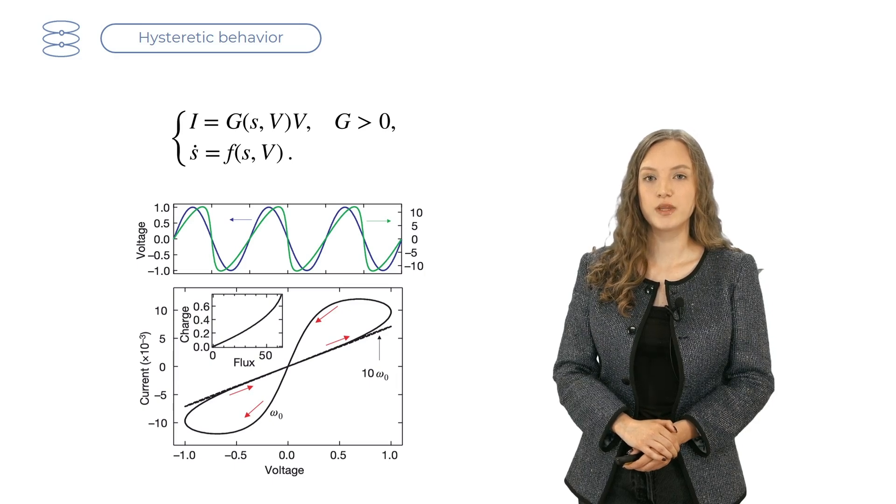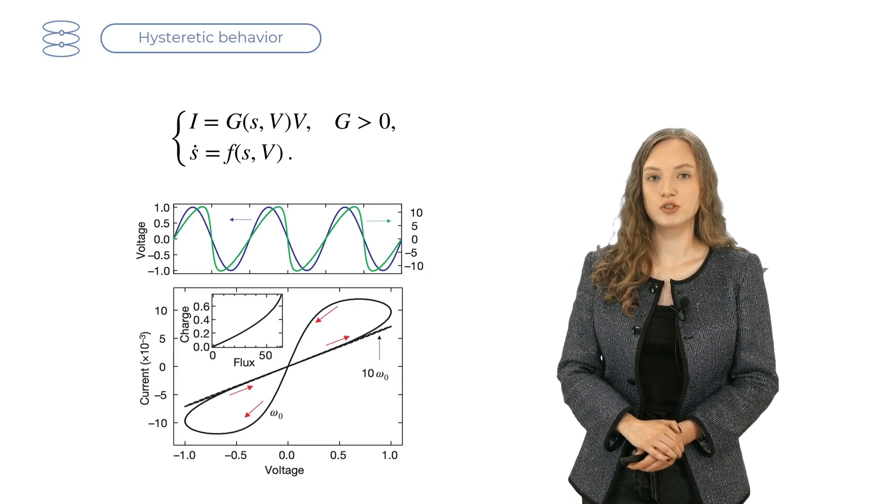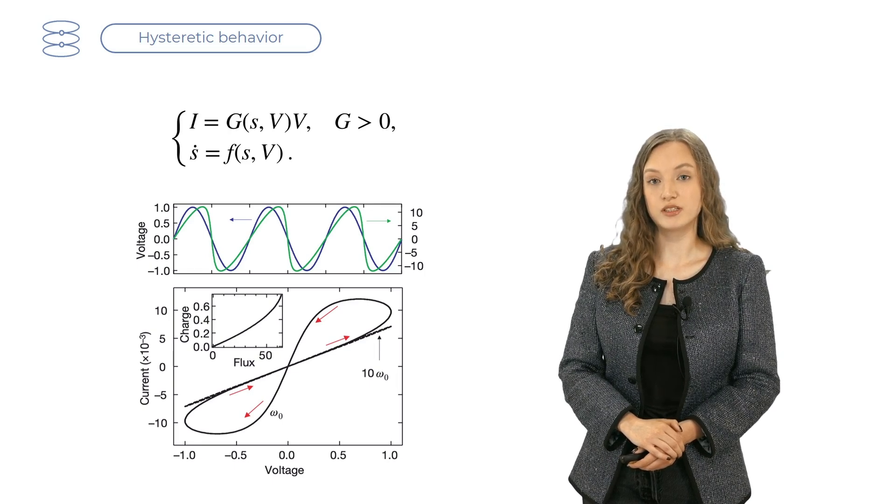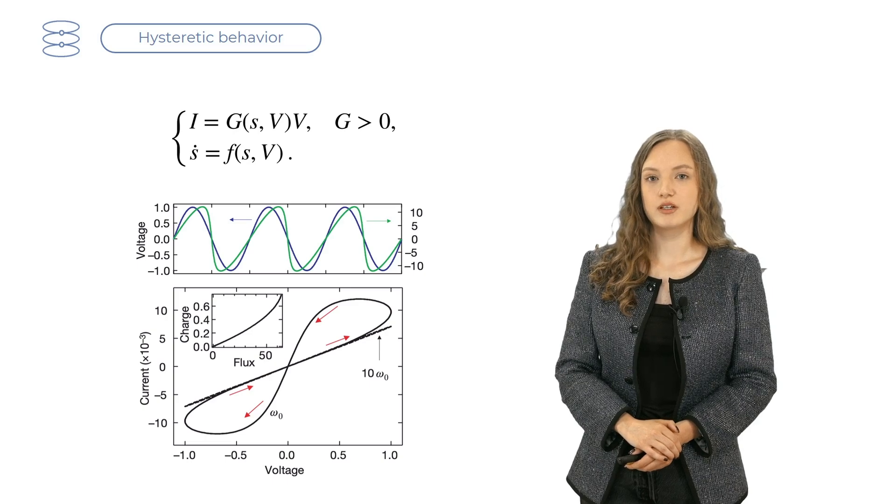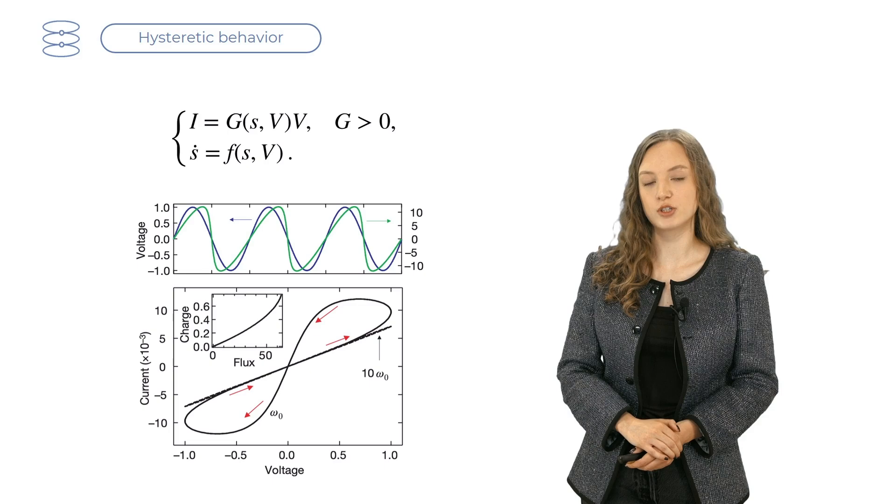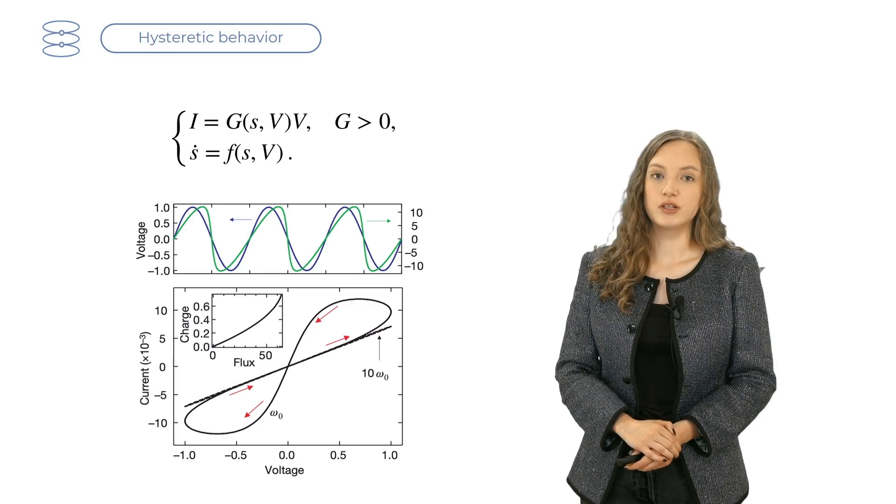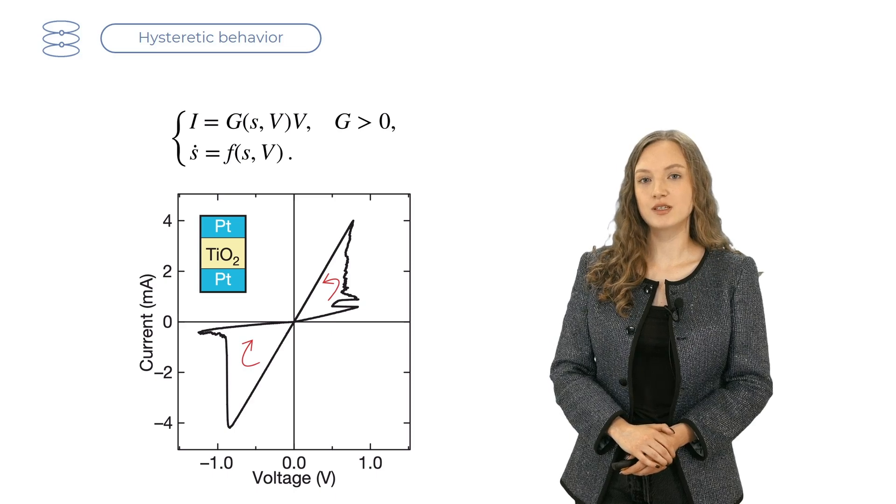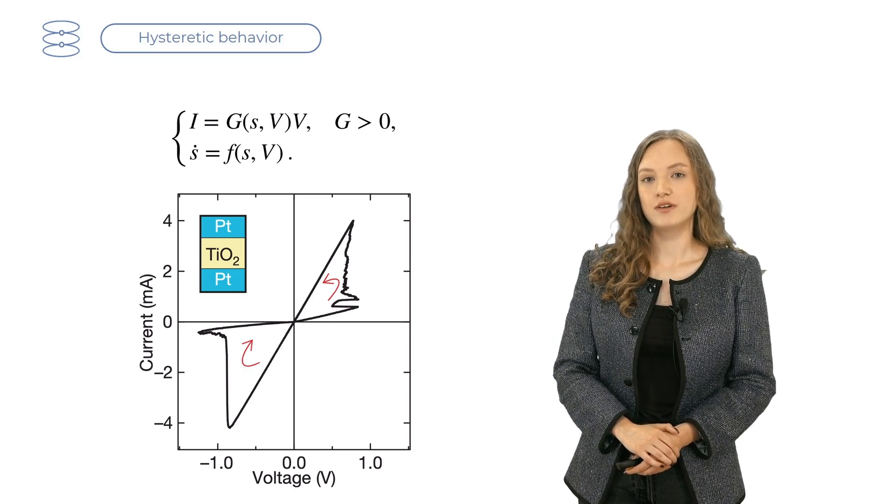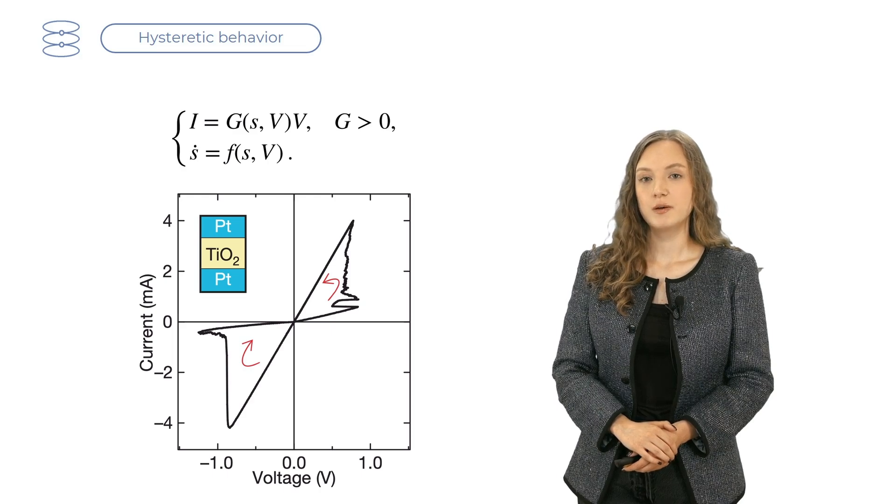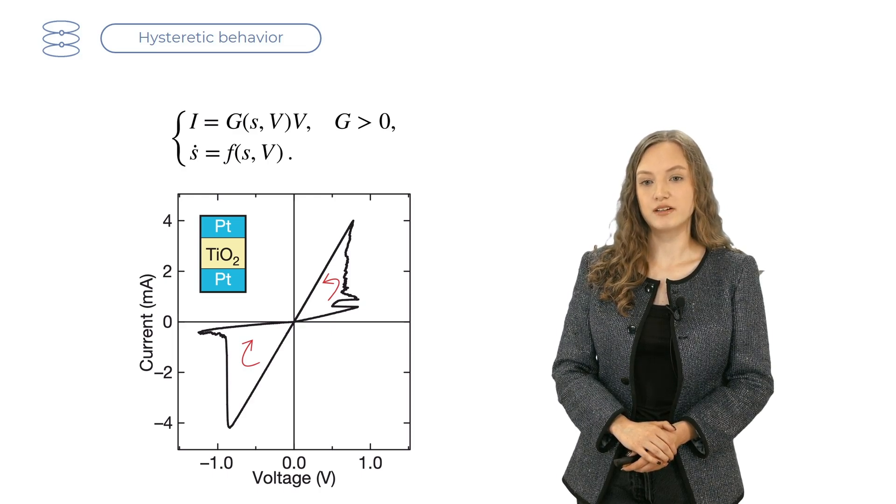At a very high voltage frequency, 10ω₀, the hysteresis collapses into a straight line, which is a current voltage characteristic of a plain resistor. This happens because at such high frequency, there isn't enough time for sufficient movement of oxygen ions to occur, which would have changed the resistance. The experimental dependence looks a bit more complicated, due to various imperfections and other effects that our model didn't account for. But the hysteresis curve is still apparent.